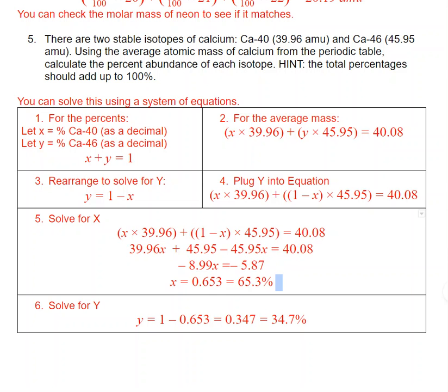So that means that the fractional percent is much closer to 40, the mass of 40. We've got 65.3% for x, and we can subtract from 100 to get the percent for y. And this makes sense because the average mass is closer to the mass of 40 than it is to 46.